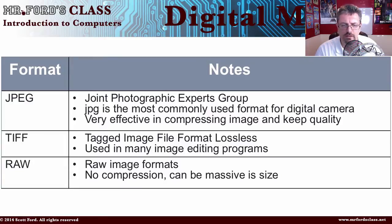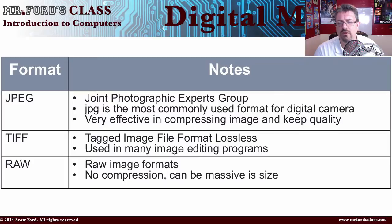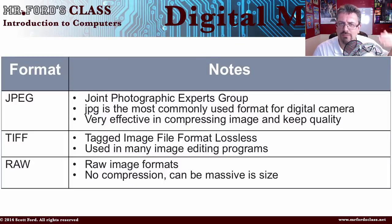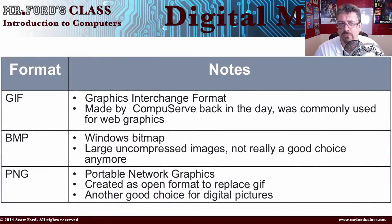A TIFF - Tagged Image File Format - is lossless and is used in many image editing programs. RAW files are a raw image format with no compression, and these can be massive in size. When I was in the world of the FBI, a lot of the forensic folks had to take images as raw file formats because that was the only thing that could be used as evidence - it meant it was not tampered with, not compressed, not changed in any way; it was a raw image of a crime scene. A GIF - Graphic Interchange Format - was made by CompuServe back in the day and was commonly used for web graphics.